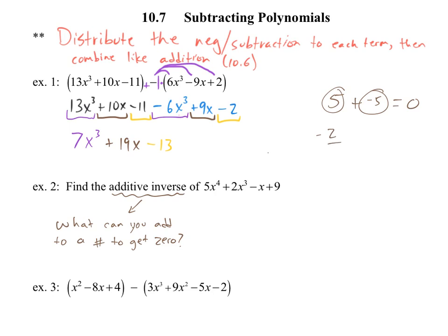So 5 and negative 5 are going to be additive inverses. Or if I were to have a negative 2/3, plus what gives me 0? 2/3, right?